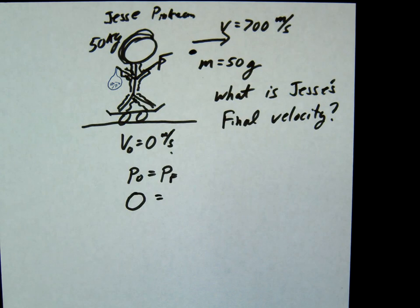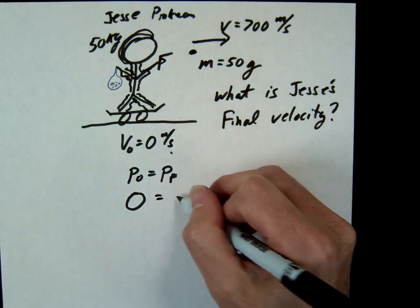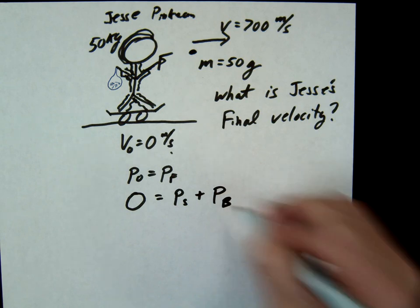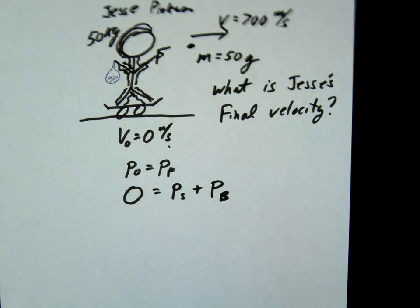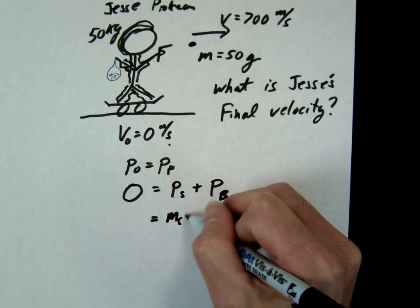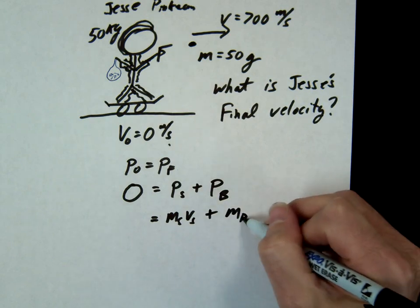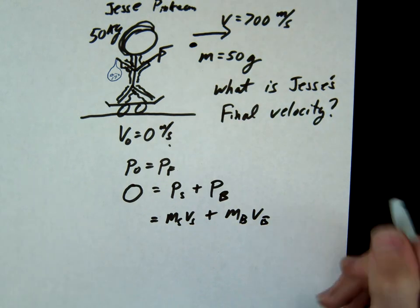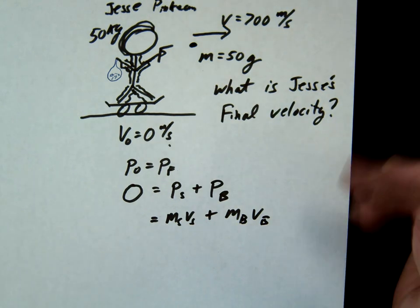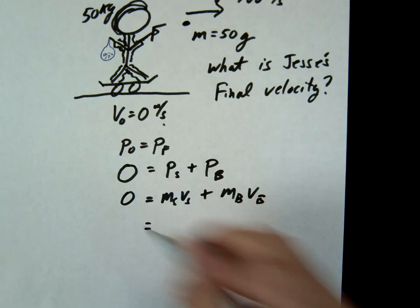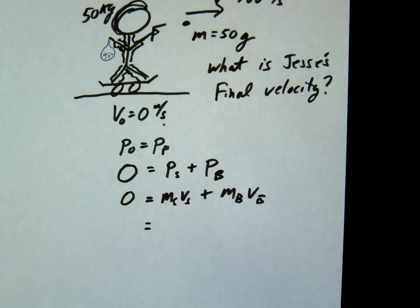What you're going to do is say zero is our initial. Then we're going to have the momentum of the skater plus the momentum of the bullet. Momentum of the skater: mass of the skater times velocity of the skater, plus mass of the bullet times velocity of the bullet. Now I'm going to do something here with the mass of the skater that in this problem won't really make much of a difference, but conceptually I want you to understand it, and on future problems it will.